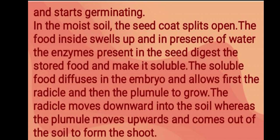The soluble food diffuses into the embryo and allows first the radicle and then the plumule to grow. The radicle moves downward into the soil whereas the plumule moves upwards and comes out of the soil to form the shoot. The radicle actually forms the root of the plant.